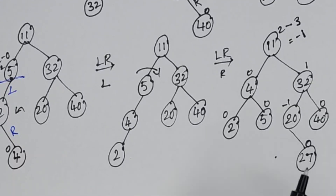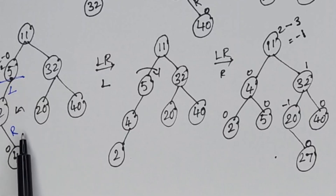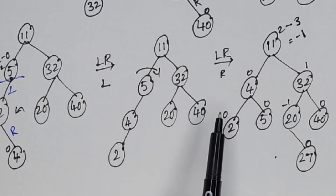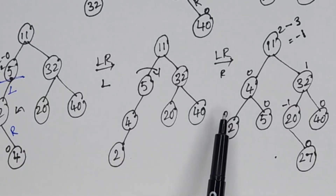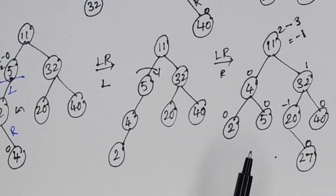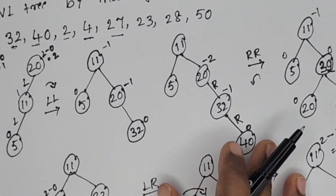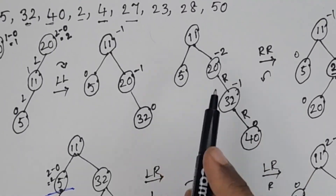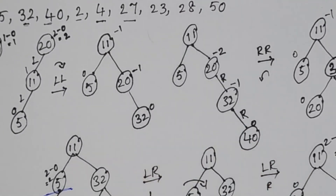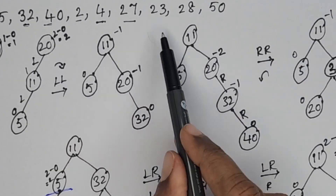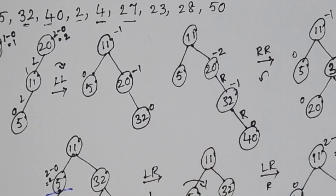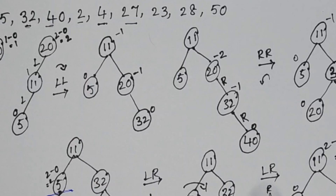Like this, we add elements one by one. If the tree becomes unbalanced, we balance it using one of the four rotations. The next remaining three elements to insert are 23, 28, and 15. If you have any doubts, you can ask in the comment section. Thanks for watching. Bye.